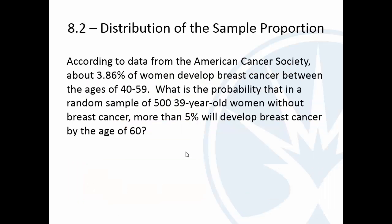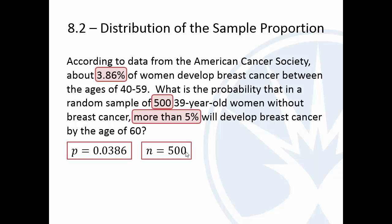All right, let's do another one. American Cancer Society says that between the ages of 40 and 59, about 3.86% of women develop breast cancer. So what if we have a random sample of 500 39-year-old women without breast cancer? What's the probability that more than 5% of them will develop breast cancer within the next 20 years? So we have that 3.86, that's our population proportion, the sample size is 500, and we're looking for the probability that the sample proportion is more than 5%.